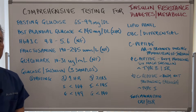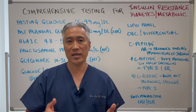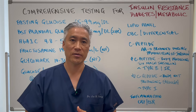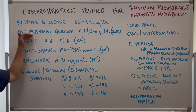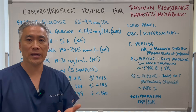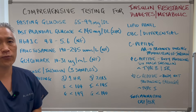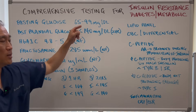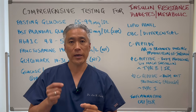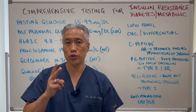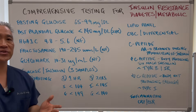Number one is fasting glucose. Fasting glucose is morning glucose when you have not eaten for 10 to 12 hours. The marker should be between 65 and 99. You can also do a post-prandial glucose, which is after a meal — wait two hours and your blood glucose should be under 140. These two tests you can do at home with a glucometer to check for the first signs of insulin resistance.